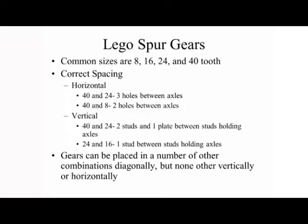For horizontal spacing: a 40-tooth and 24-tooth gear require 3 holes between axles; a 40-tooth and 8-tooth require 2 holes between axles. Vertically: a 40-tooth and 24-tooth require 2 studs and 1 plate between studs holding axles; a 24-tooth and 16-tooth require 1 stud holding axles. Gears can also be placed diagonally in other combinations.